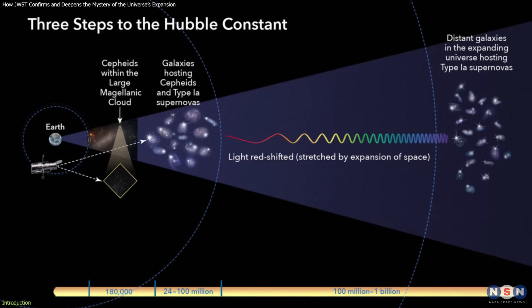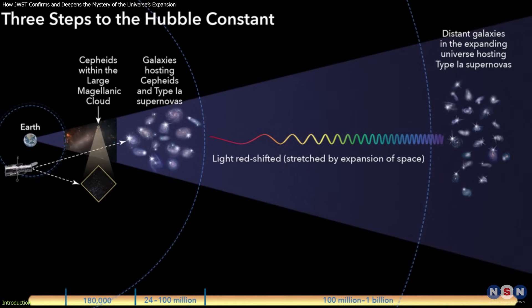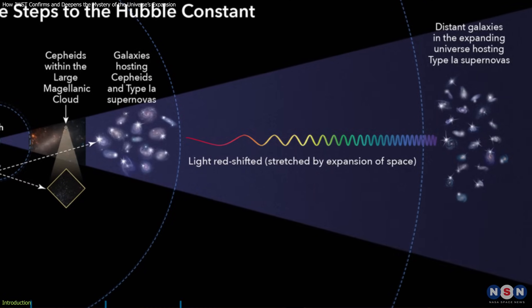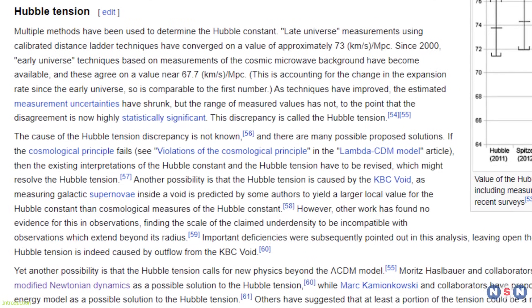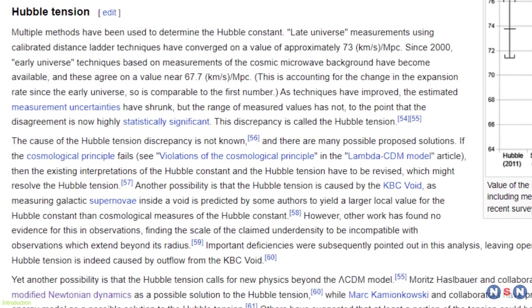But there is a problem. Different methods of measuring the Hubble constant give different results, and no one knows why. This is called the Hubble tension, and it is one of the biggest mysteries in cosmology today.